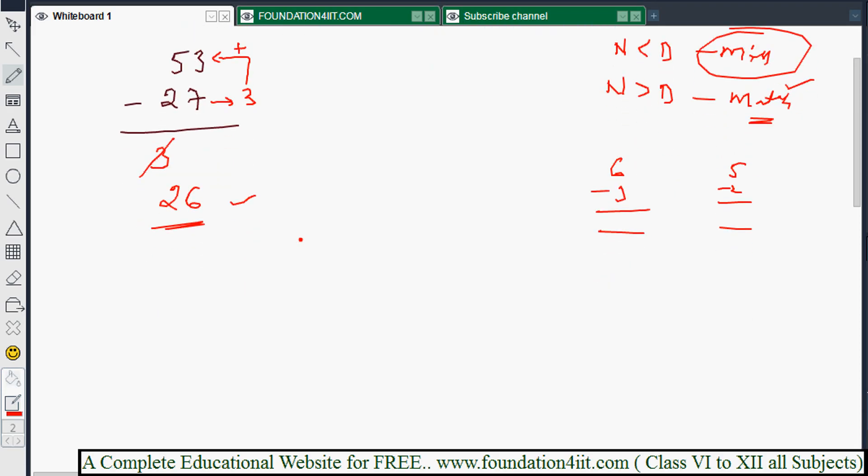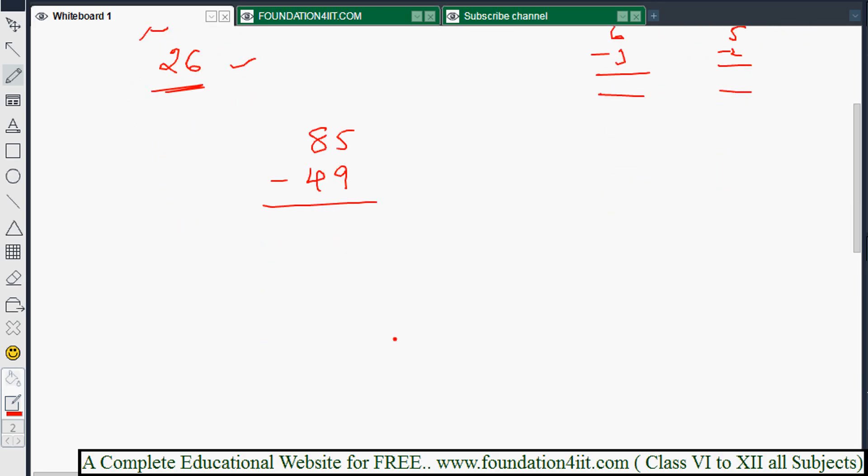So 26 is the answer for 53 minus 27, only by observing the mismatch and match combinations. Let me take another example: 85 minus 49. Now 8 and 4 - just observe the first 8 minus 4 is natural subtraction, that is 4. But when you come to the next pair, 5 and 9, numerator is lesser than - just by internally observing only we have to do this, need not to take and write. So 4 will reduce 1 to 3 because next pair is a mismatch combination. Now immediately 9 complement is 1. This 1 will add to this top number. 1 plus 5 is 6 directly. So 36 is the answer.